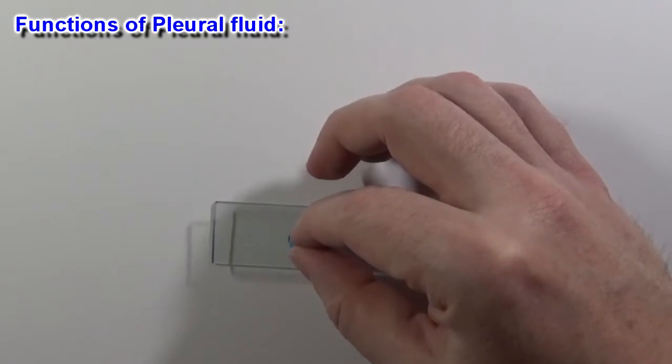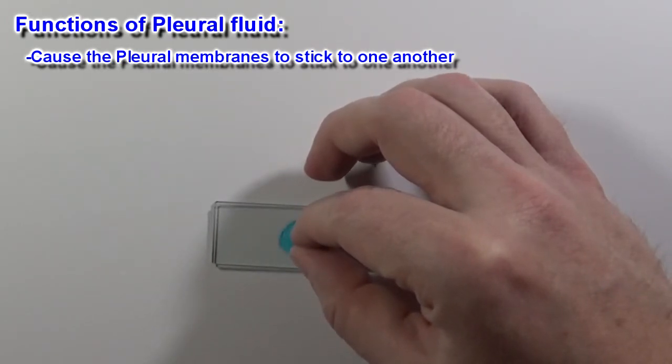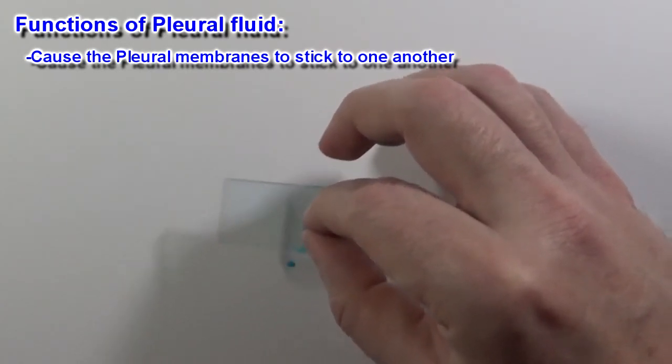Now one of the functions of the pleural fluid is that it will make the pleural membranes, the parietal and visceral pleura, make them stick together. And you can see when I do that, the slides stick together.